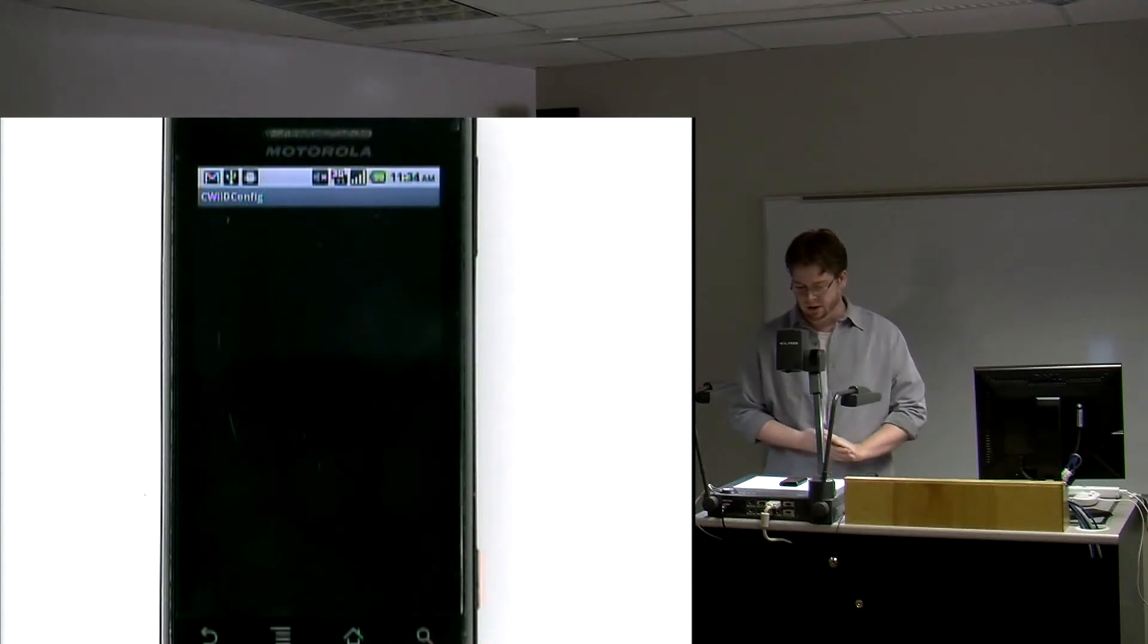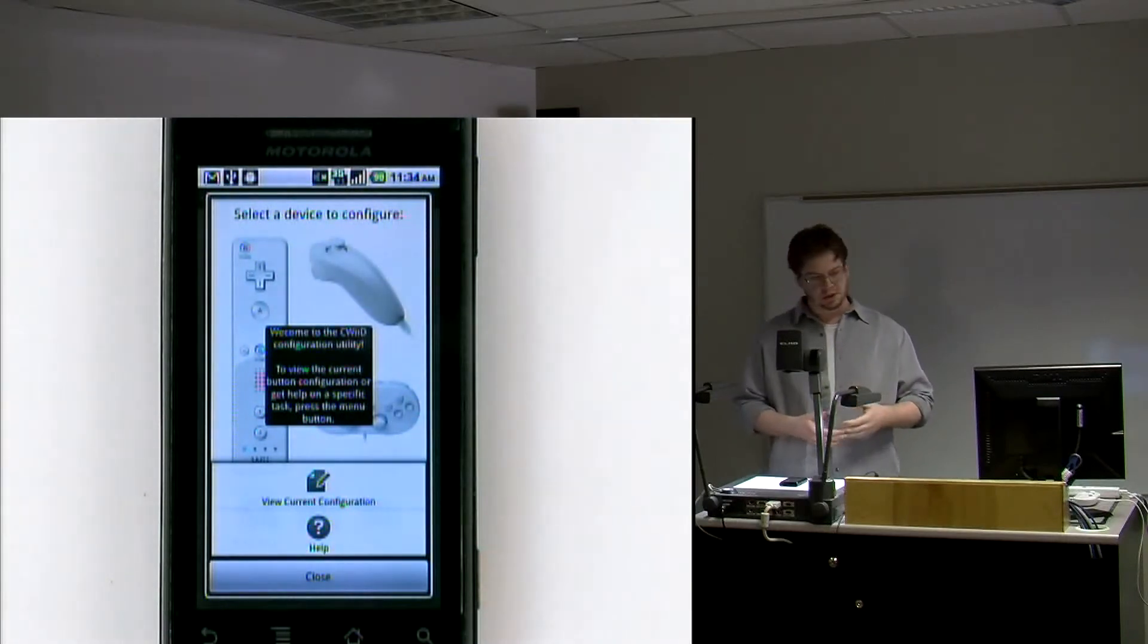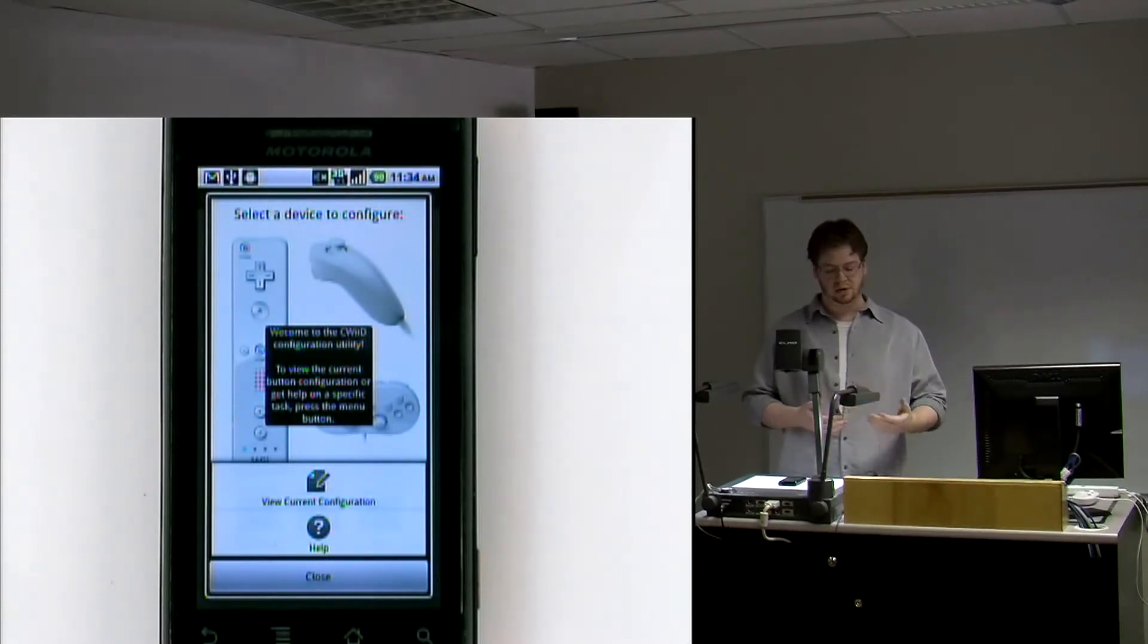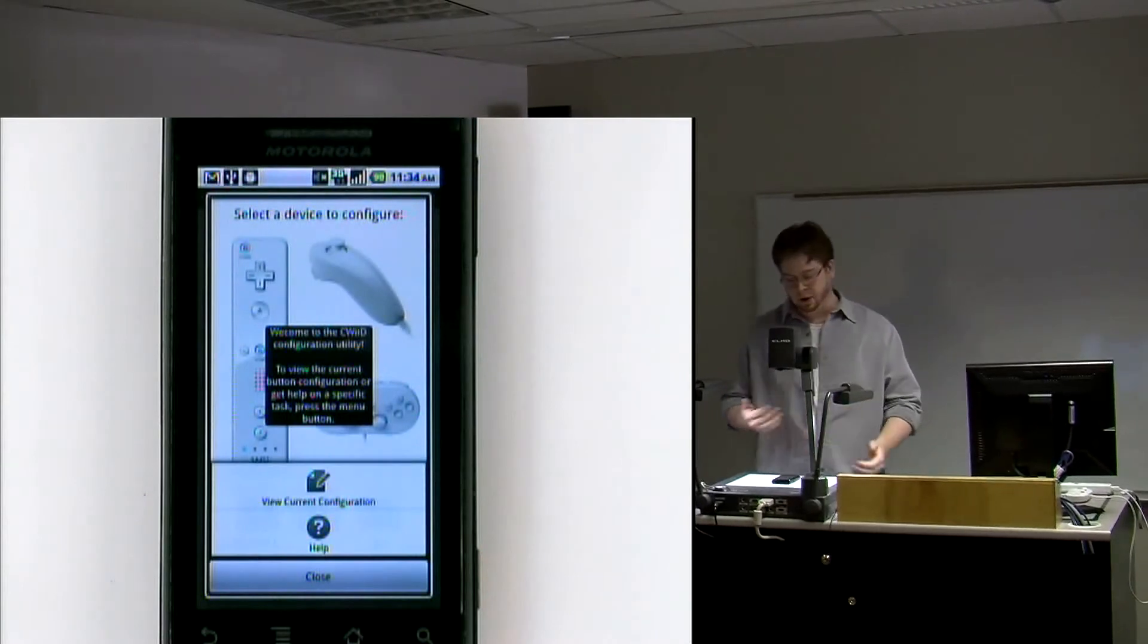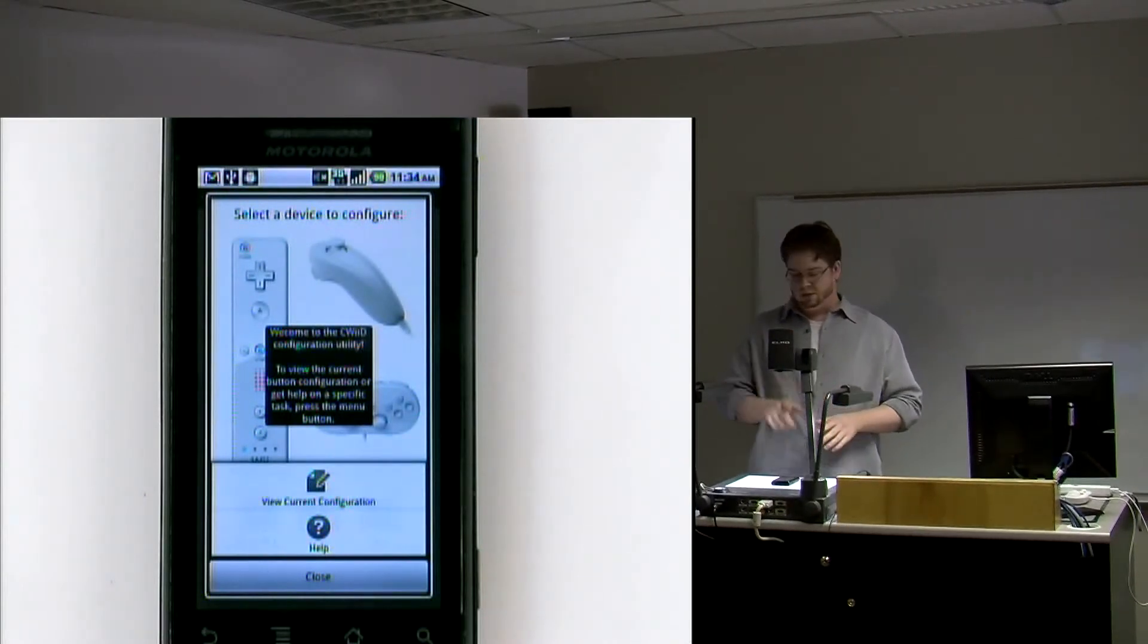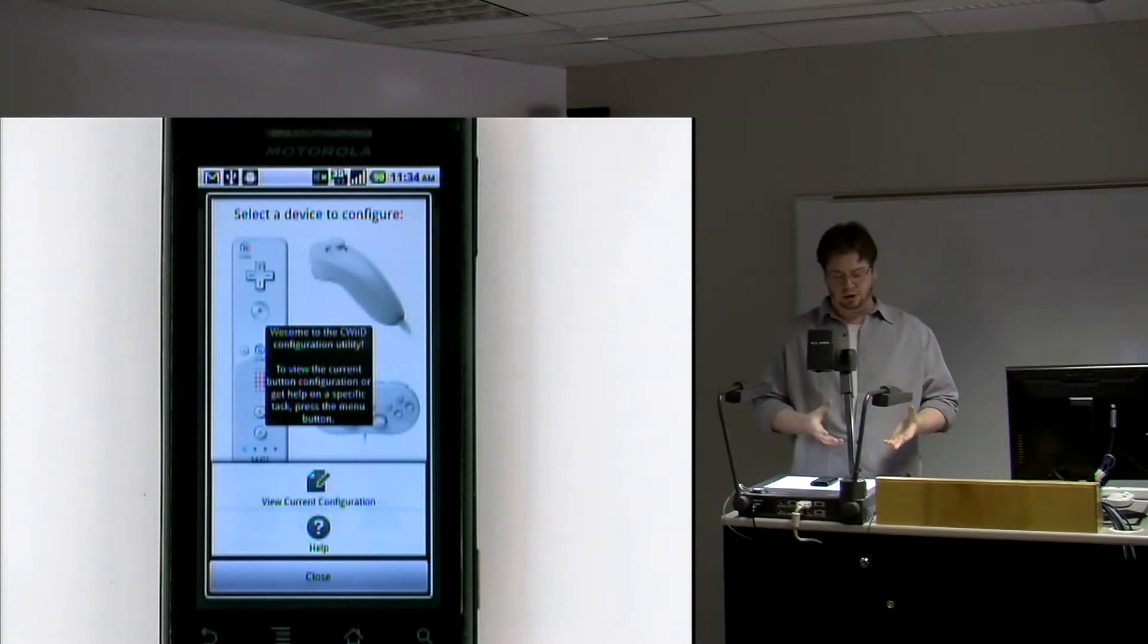So once you start it up on the first run, it'll give you a little help box here that welcomes you to the utility and also informs you that there's options within the menu because the menu itself is never actually shown unless you push the menu button. So without something like this, a first time user would never know that those options are there. It tells them that at any point in the program you can hit menu and you'll be able to either view whatever your current CWD configuration is or you can also get help for whatever current screen you're on.